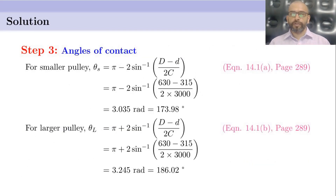In step 3, we find the angles of contact. For the smaller pulley, θS is given as π minus 2·sin⁻¹[(D − d) / 2C], which is equation 14.1k on page 289. Substituting the values of D, d, and C, we get θS for the smaller pulley and θL as 3.245 radians, or 186°.